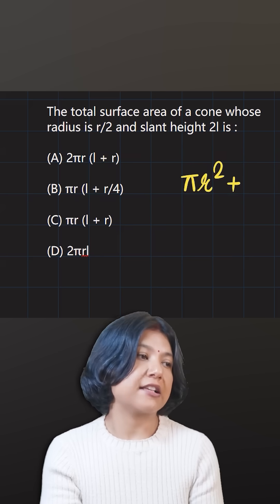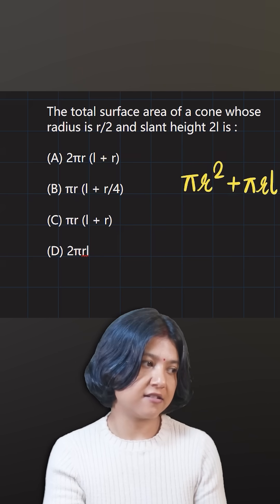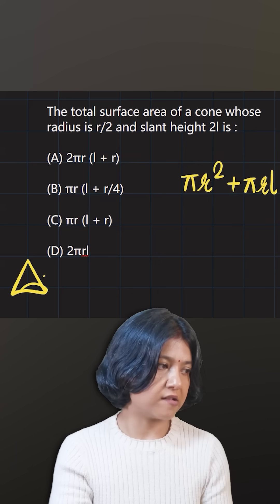And the curved part has the area pi times r times the slant height. This is the slant height.